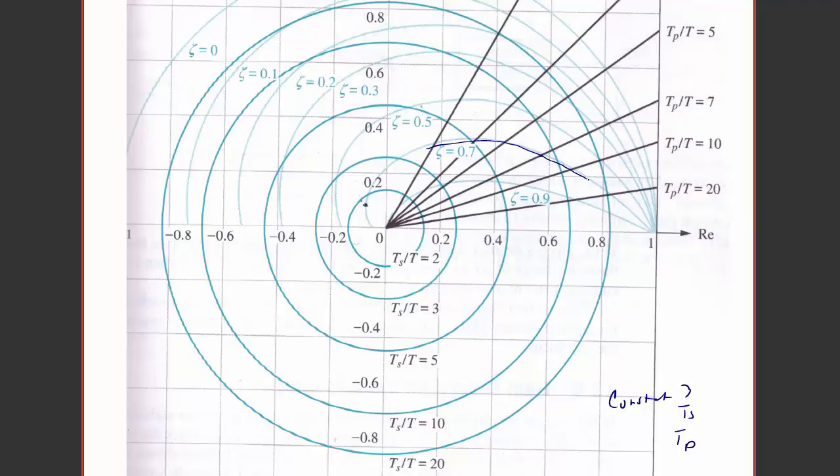So that would be somewhere around the intersection in here, or ts over t equals 15, so that's somewhere between these two concentric circles. So that would be somewhere also right around here.